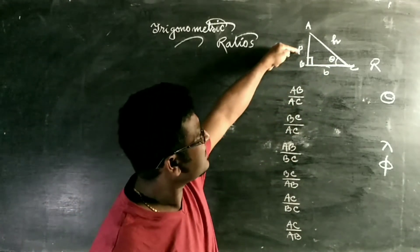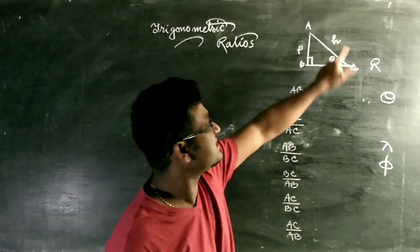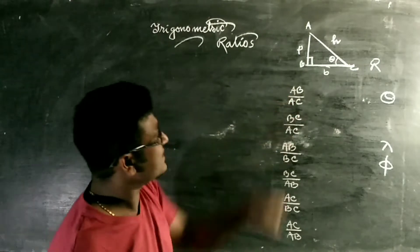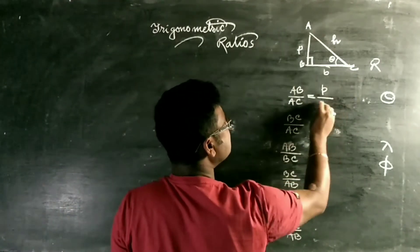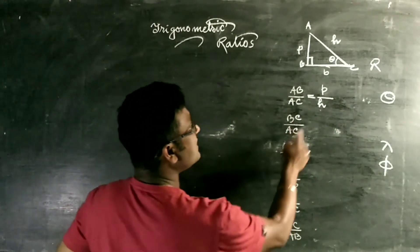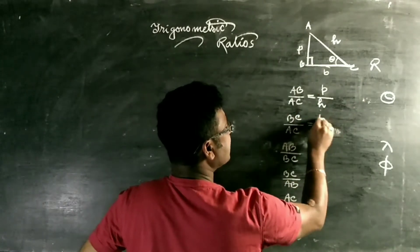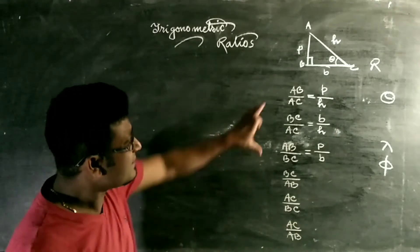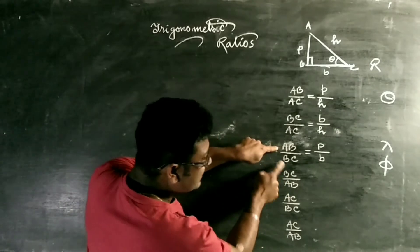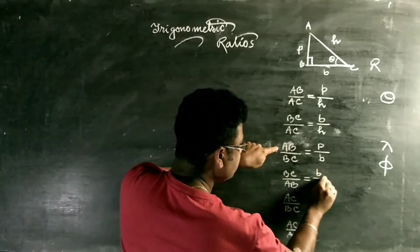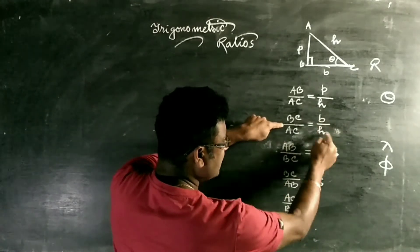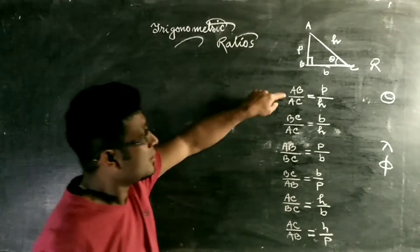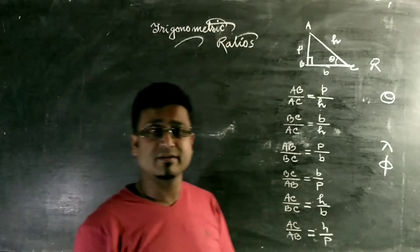Since there are three sides, we can take the ratios: AB by AC gives P by H; BC by AC gives B by H; AB by BC gives P by B. Writing their reciprocals: BC by AB gives B by P; AC by BC gives H by B; and AC by AB gives H by P. These six are the trigonometric ratios.